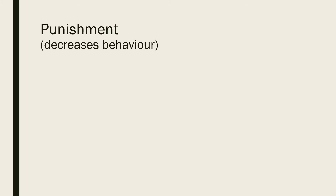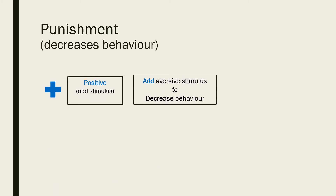Punishment is defined as the opposite of reinforcement since it is designed to weaken or eliminate a response rather than increase it. It is an aversive event that decreases the behaviour that it follows. There are two kinds of punishment. Positive punishment presents an unfavourable event or outcome in order to weaken the response that follows — for example, spanking for misbehaviour.